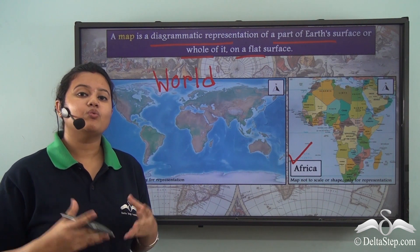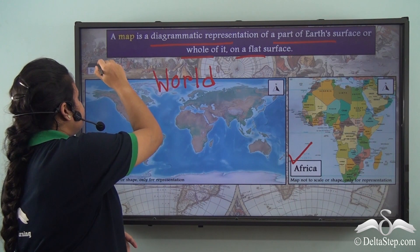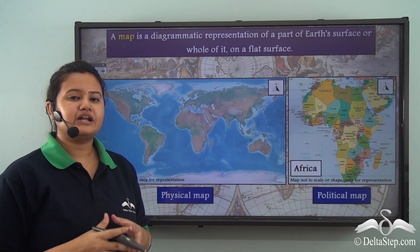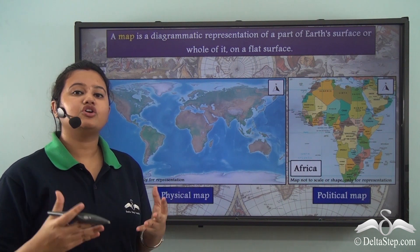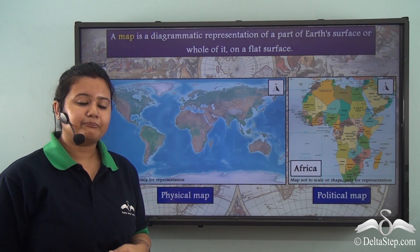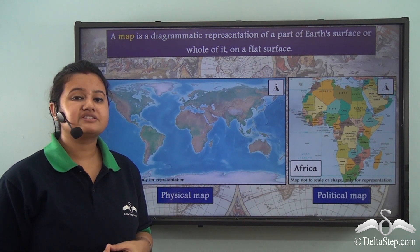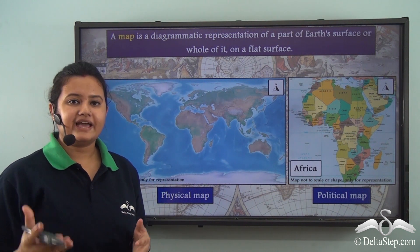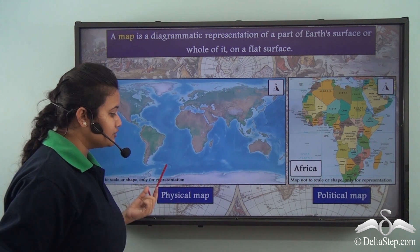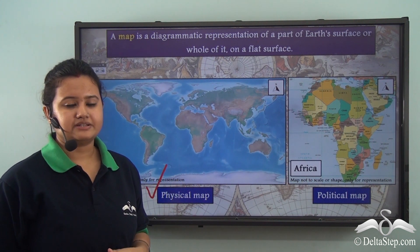Now do you know what these maps are called? Well, the maps that show physical features or geographical features of a place — for example mountains, hills, rivers, valleys etc. — are known as physical maps. So physical maps show the physical features of a place.